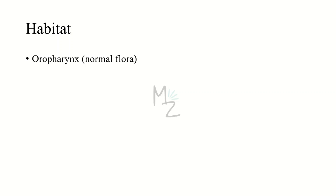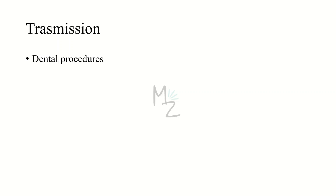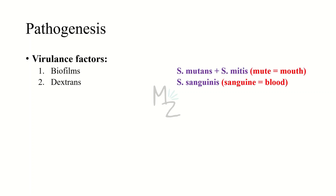Habitat: Unlike Streptococcus pneumoniae, this bacterium lives in the oropharynx and is part of our normal flora. Transmission occurs due to dental procedures. There are two major virulence factors for Streptococcus viridans: number one is biofilms and number two is dextrans. Streptococcus mutans and Streptococcus mitior both release biofilm and are present in the mouth, so during any dental procedure they can gain access to the bloodstream and cause infection. You can memorize this with 'mutans/mitior' — 'mute' relates to the mouth.